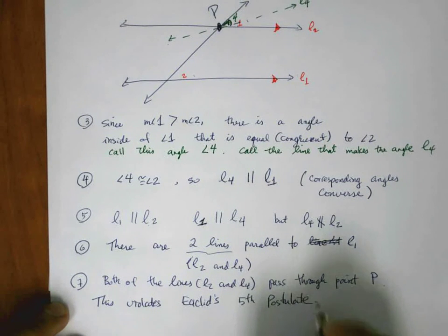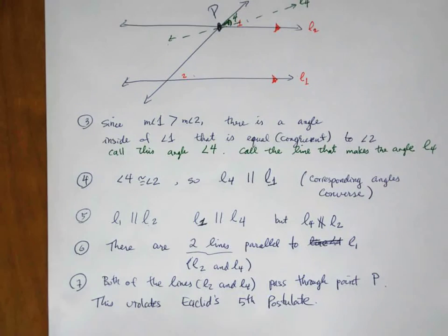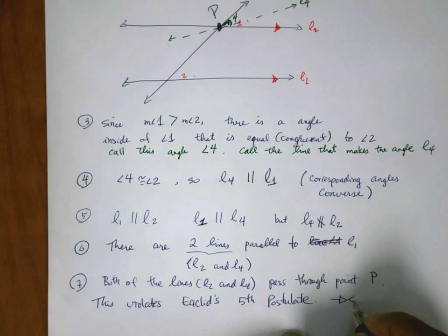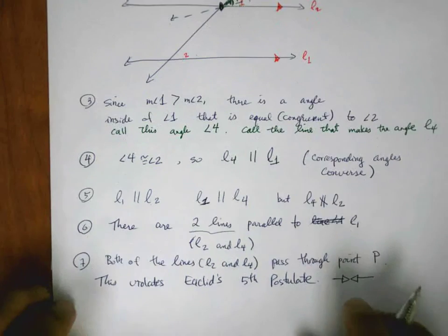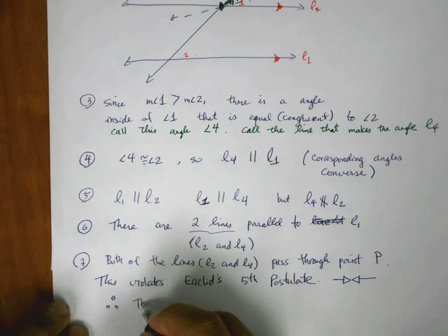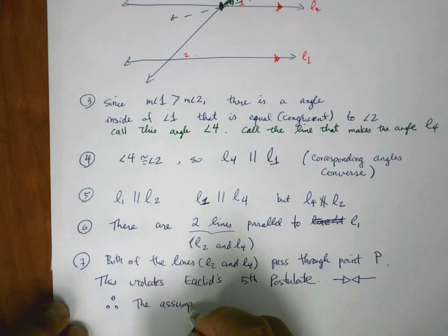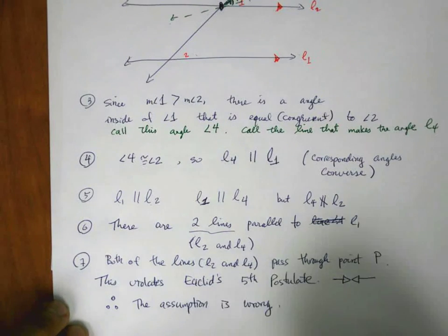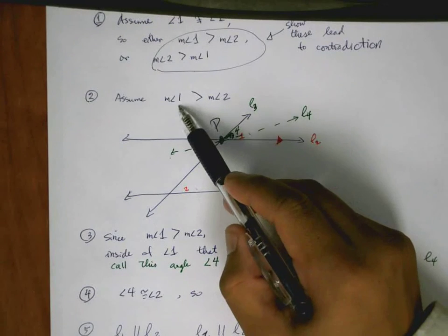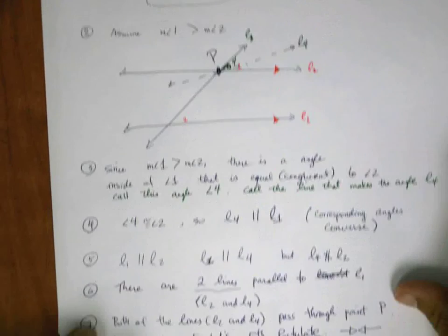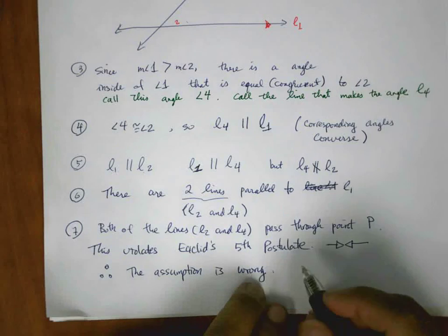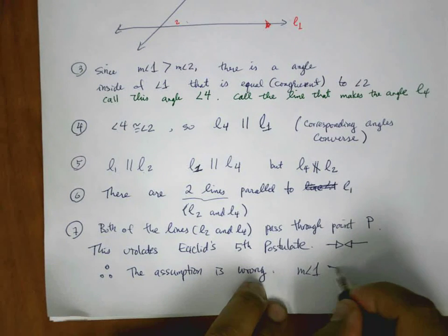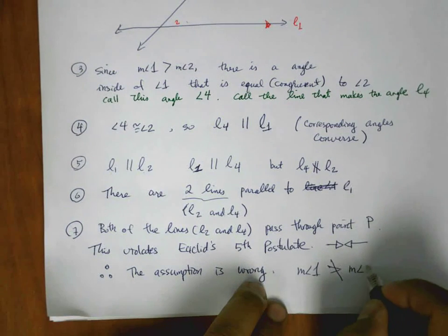This is a direct violation of Euclid's fifth postulate, which means we have a contradiction. Therefore, the assumption is wrong. The assumption was that the measure of angle 1 is greater than the measure of angle 2, so the measure of angle 1 is not greater than the measure of angle 2. Half of the proof is done.